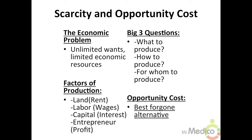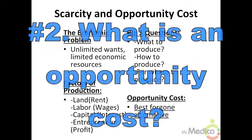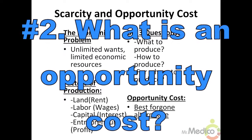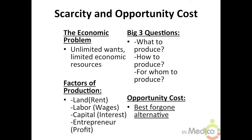Every society must determine how it will allocate the scarce economic resources. In market economies, markets through the laws of supply and demand allocate resources. Central planners allocate resources in command economies, and tribal chiefs and customs allocate resources in traditional economies.